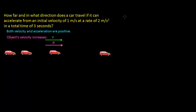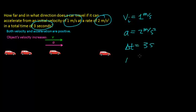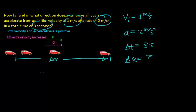Let's summarize the information: the initial velocity is v₀ = 1 m/s, the acceleration is a = 2 m/s², and the total time is t = 3 s. What we're looking for is the total displacement — the distance and direction this car travels during those three seconds — and since it's displacement, we also need to indicate the direction.